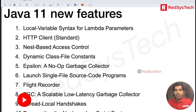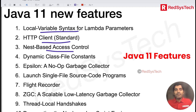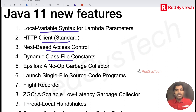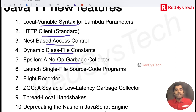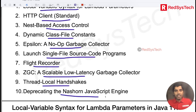The first one is local variable, where we are going to use var inside the lambda parameters. Then we are going to see HTTP client, nest-based access control, dynamic class file constants, no-operations garbage collector, single file source code programs, additional methods for flight recorder with JVM monitoring, thread local handshakes, and the deprecation of the JavaScript engine. Let's get started one by one.